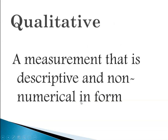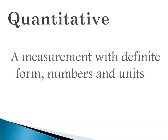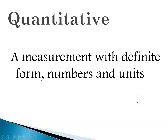A qualitative measurement is descriptive but non-numerical — like 'that's a middle shade of blue' or 'you look kind of sick.' A quantitative measurement has a definite form: numbers and units. So that's a shade of blue corresponding to 460 nanometers, or someone has a fever of 101.3 degrees Fahrenheit. Quantitative measurements always have a number and a unit associated with them.